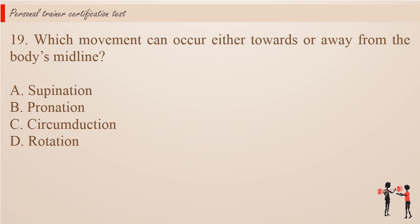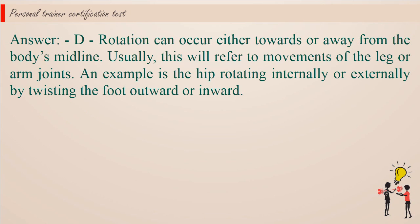Question 19. Which movement can occur either towards or away from the body's midline? a. Supination. b. Pronation. c. Circumduction. d. Rotation. Answer: d. Rotation can occur either towards or away from the body's midline. Usually, this will refer to movements of the leg or arm joints. An example is the hip rotating internally or externally by twisting the foot outward or inward.